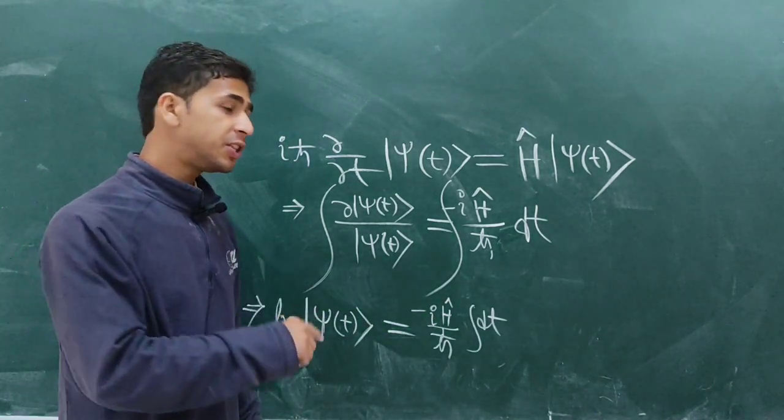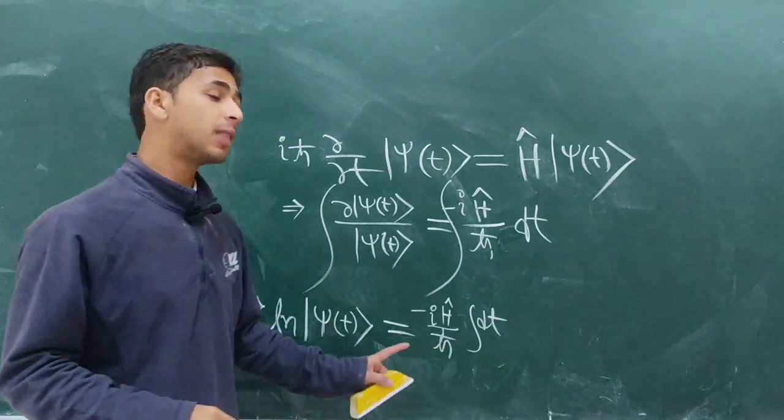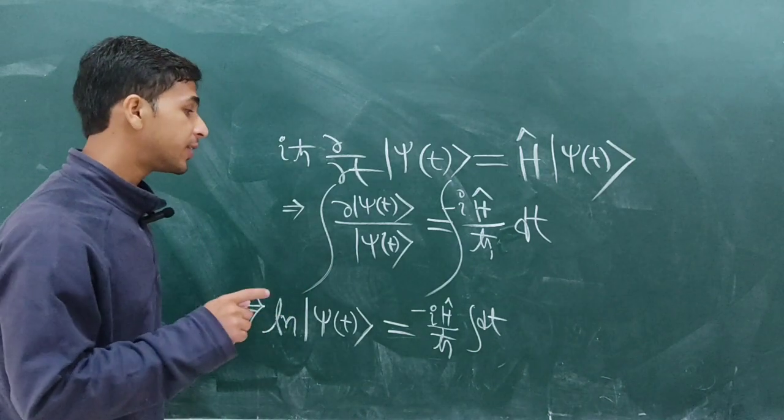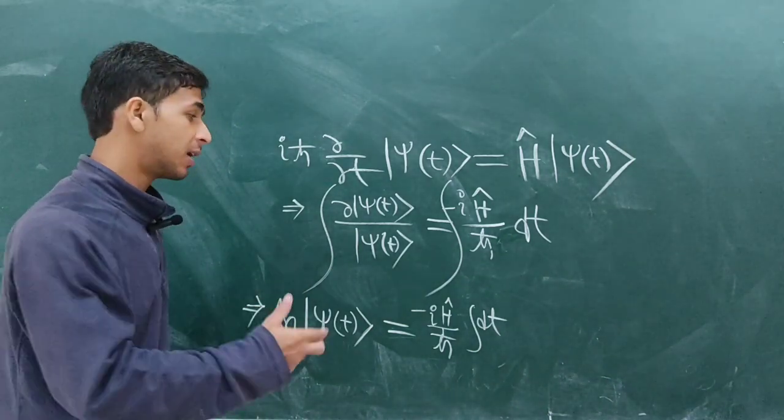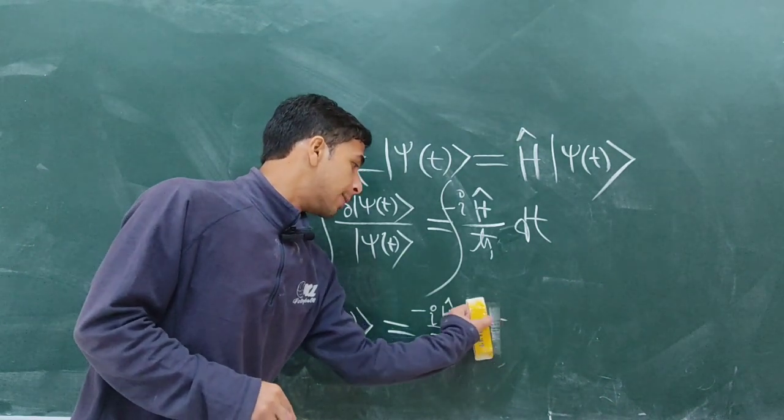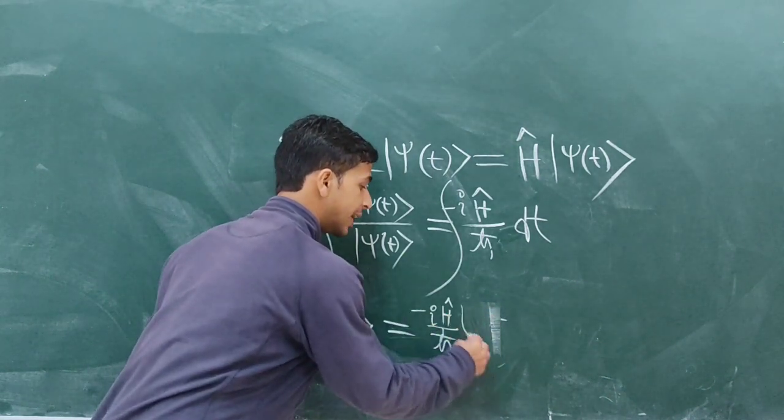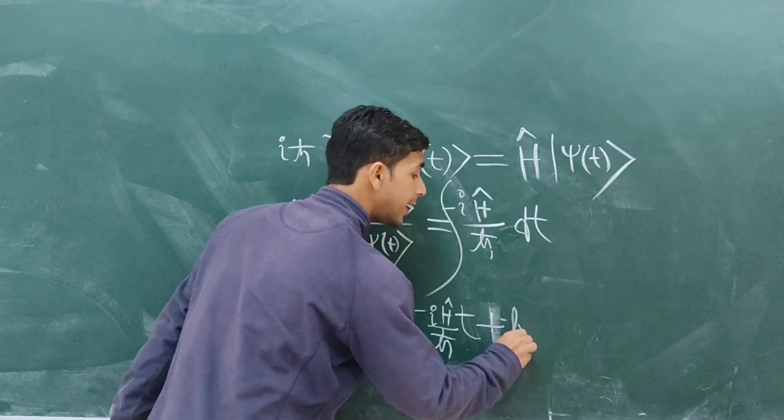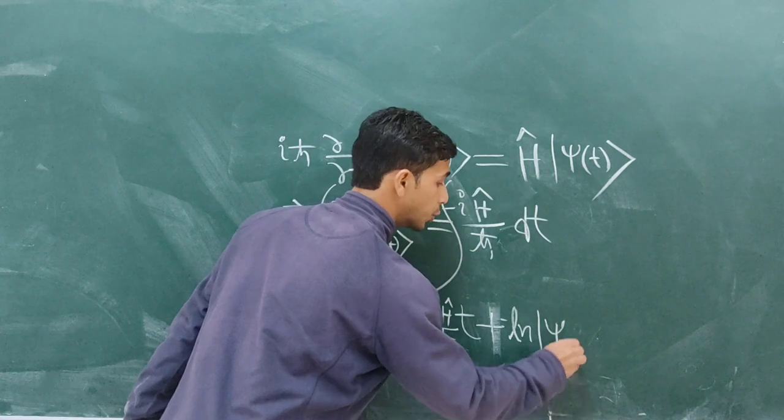And as in this case we have not mentioned the limits of integration, it's an undefined integration. So we will get some constant term, and after integration we will get t instead of dt, and the constant term we are denoting as ln ψ₀.